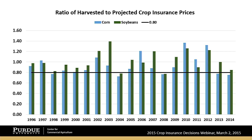In a year like 2015, the odds of triggering a payment because of price decline alone are probably fairly small. Prices and yields tend to go in opposite directions, so even though we see 2013 or 2014 below the 0.8 bar — potentially triggering some payments based on a price drop — if yield increases high enough, revenue still doesn't drop enough to trigger a payment.